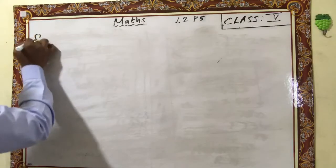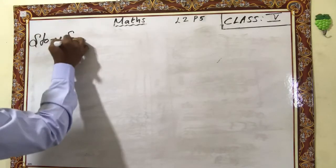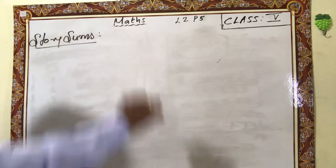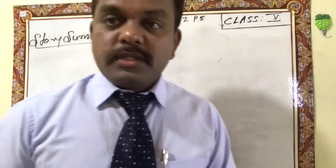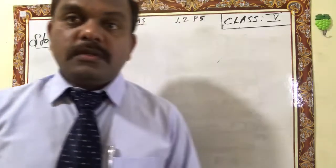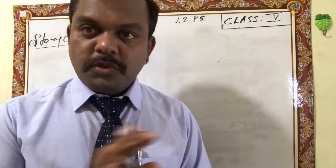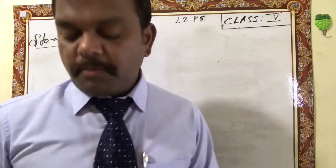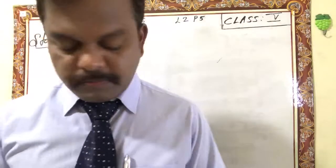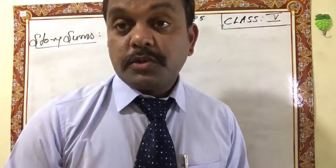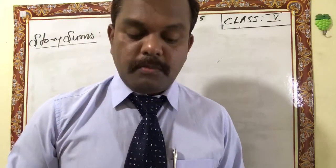Story sums: you should write steps. Without writing steps, don't do story sums — steps are compulsory. From your book, one simple example I will start: Exercise 2.7, 8th question. Mr. Kahn earns 97,080 rupees in a year.